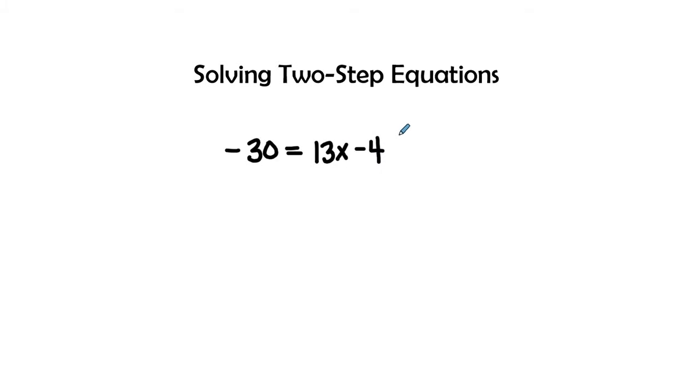how I can move the 4 over to the other side is to add positive 4, or its inverse operation. And so we have negative 4 plus 4 gives us 0, and so that cancels out.